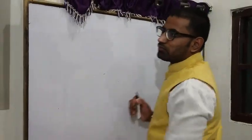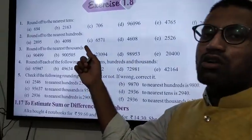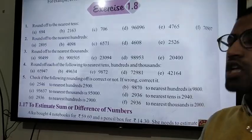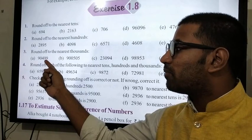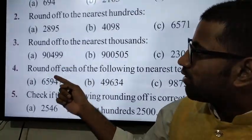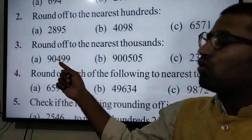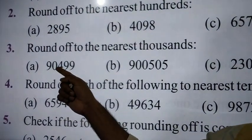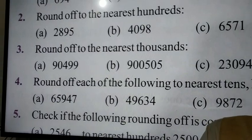Question number 3: round off to the nearest thousand. You have to round off to the nearest thousand. You just see ones, tens, or hundreds place. If the digit is 500 or more, round up. 90,499 rounds to 90,000 because 499 is less than 500. The answer will be 90,000.